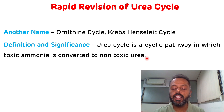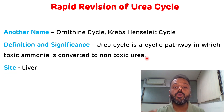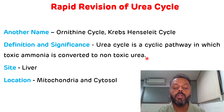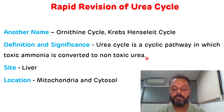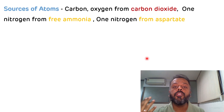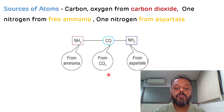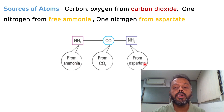The site of the urea cycle is the liver, and the location is partially mitochondrial and partially cytosolic. The first two reactions occur in the mitochondria while the remaining steps occur in the cytosol. Regarding the sources of atoms of urea: carbon and oxygen come from carbon dioxide, one nitrogen comes from free ammonia, and one nitrogen comes from aspartate.